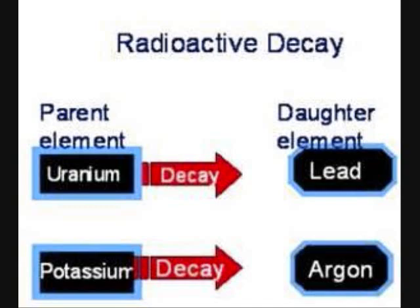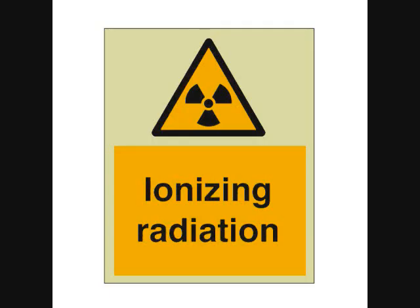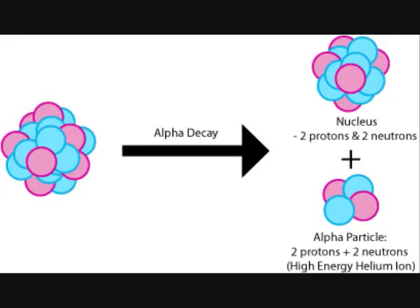We will return to gamma radiation shortly, but first we will return to radioactive decay. The three types of decay we will address are all examples of ionizing radiation. Going in order of the Greek alphabet, we start with alpha decay. When a nucleus is just too big to be stable, it reduces its size via emission of an alpha particle, also known as a helium nucleus.